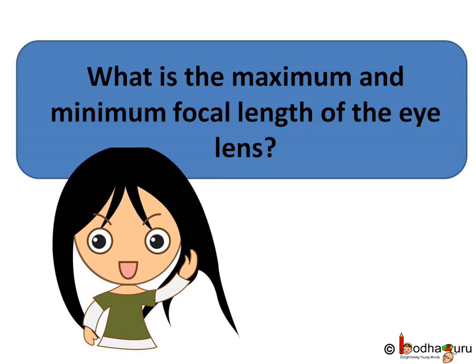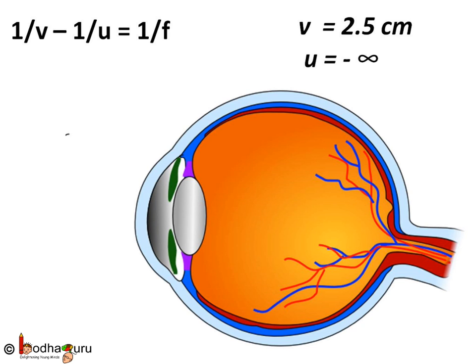Now you may ask, what is the maximum and minimum focal length of the eye lens? Let us see. Say, an object is at infinite distance and we have to see it. This hypothetical situation will give us the maximum focal length of eye lens, which means eye lens would never need a focal length beyond that.